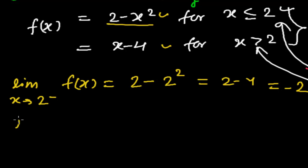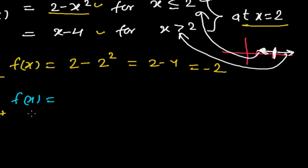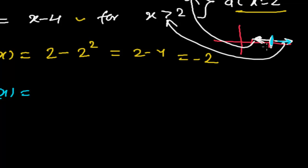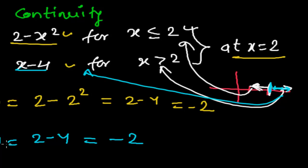Now let's find the right-hand limit: the limit as x tends to 2 plus of f(x). Since 2 plus means values slightly greater than 2, we apply the piece x minus 4. Substituting x equals 2 gives 2 minus 4, which is minus 2. So the right-hand limit is also minus 2, the same as the left-hand limit.